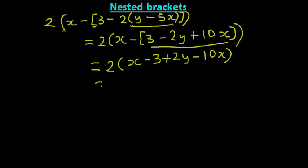Remaining this. So we now eliminate the last bracket. 2 times all the terms inside. So 2 times x gives us 2x. 2 times minus 3 gives us minus 6. Then 2 times 2y gives us 4y. Then 2 times minus 10x gives us minus 20x.